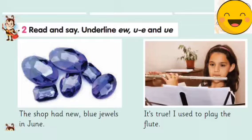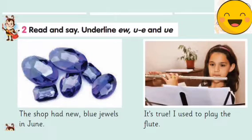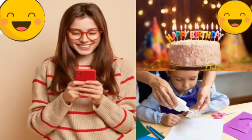The first sentence: 'The shop had new blue jewels.' In sentence one we have 'ew' in 'new', 'ue' in 'blue', and 'ew' in 'jewels'. The second: 'It's true, I used to play the flute.' Here we have 'ue' in 'true', and u-consonant-e in 'flute'.